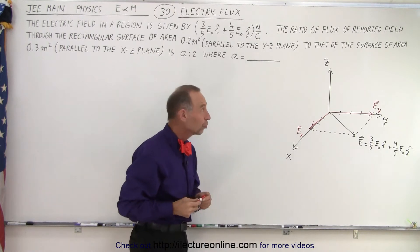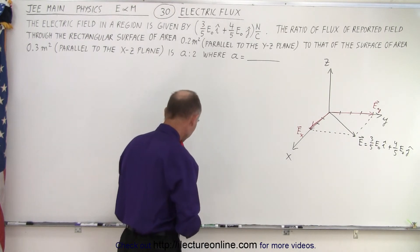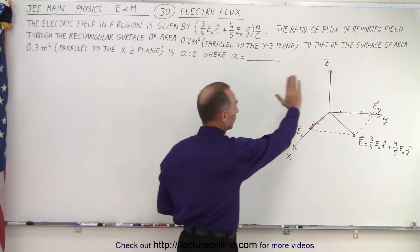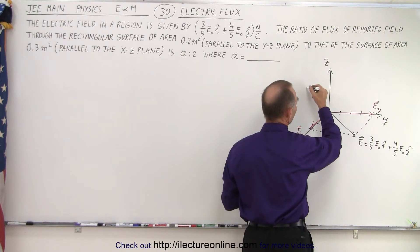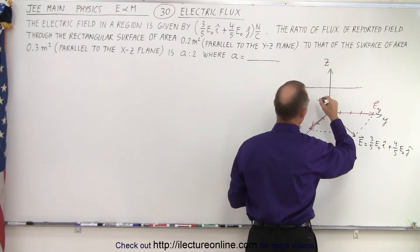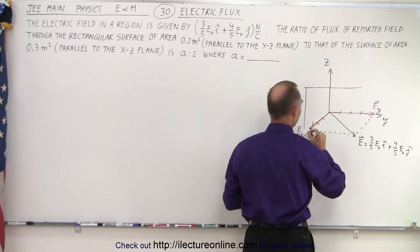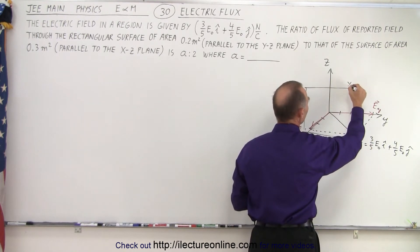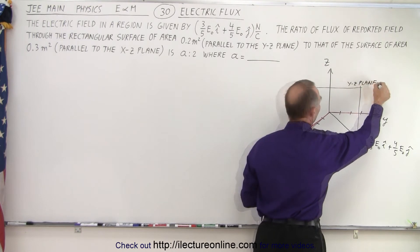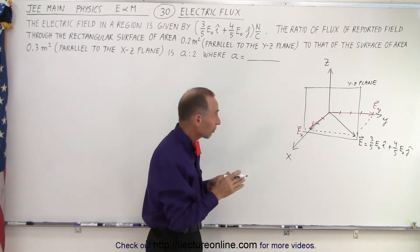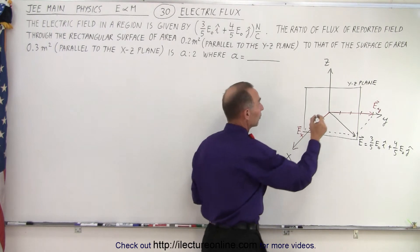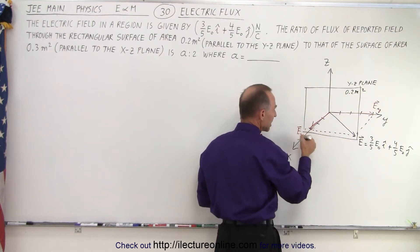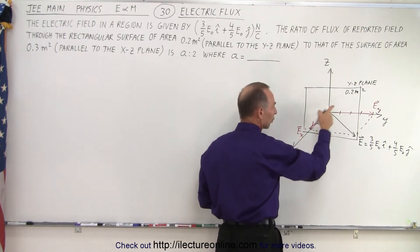So what do those two areas look like? Well, the first area is parallel to the Y-Z plane. So that's that plane right there. So let's draw an area in that direction. So here, that's what that area would look like. So I'm trying to do this in the Y-Z plane. And notice that the only component of the electric field that goes through that plane, and notice that this one is 0.2 meter squared.